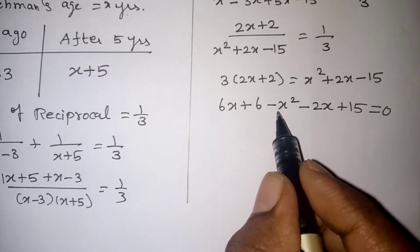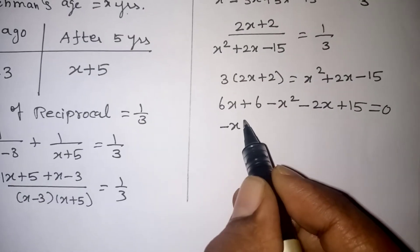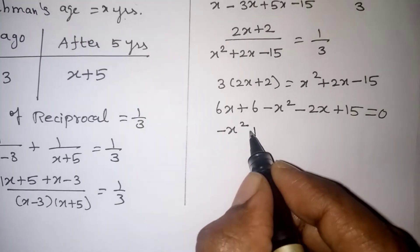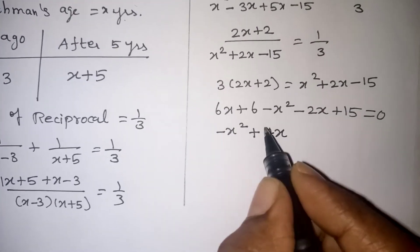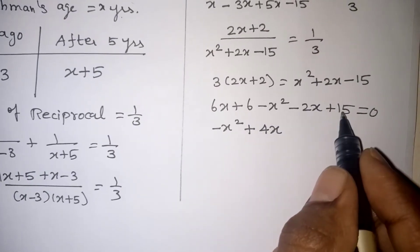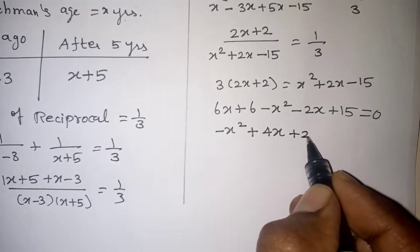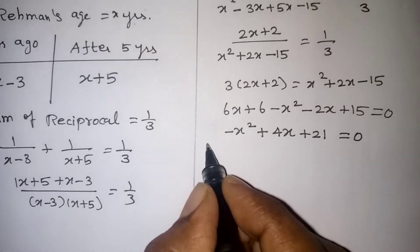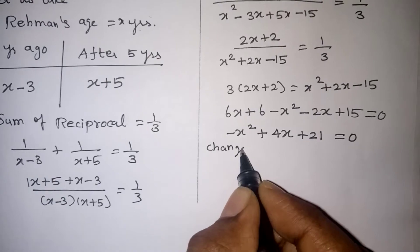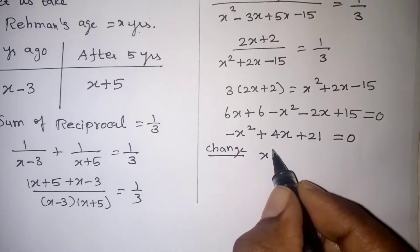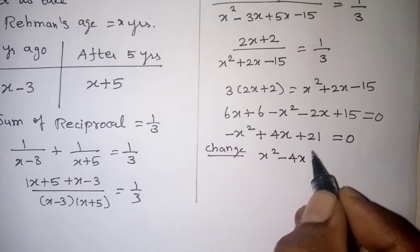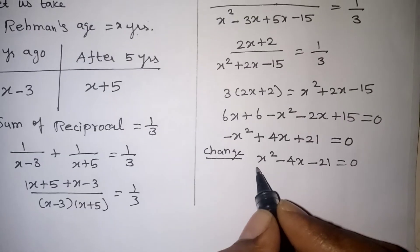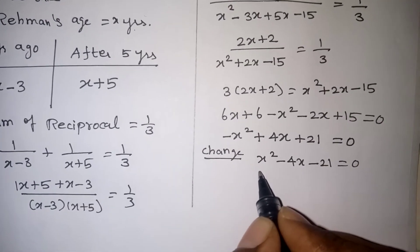Now we simplify. We have X squared as one term. Then 6X minus 2X gives 4X. And 6 plus 15 gives plus 21. So we have minus X squared minus 4X minus 21 equals 0. Since the first term has a minus sign, we change the sign for everything to get the standard form.